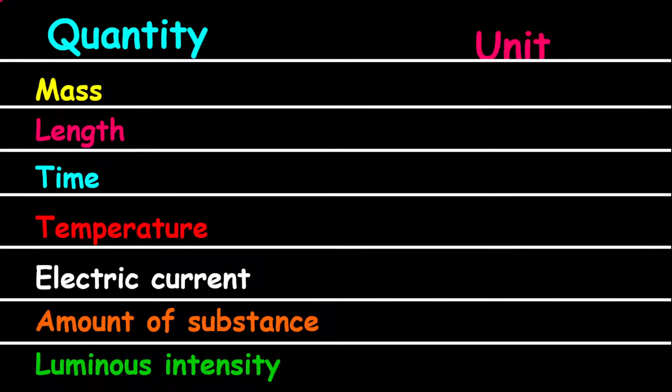The unit for mass is kilograms, represented by kg. The unit for length is meters, represented by m. The unit for time is seconds, represented by s.